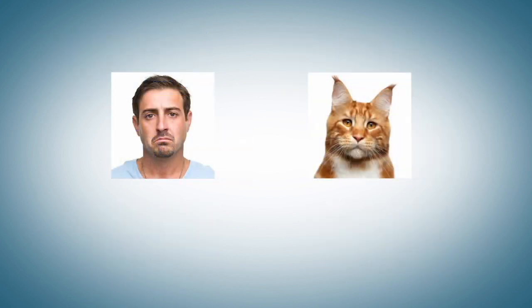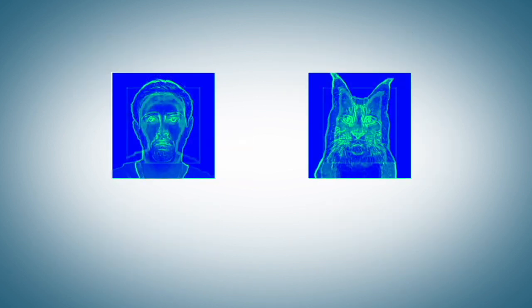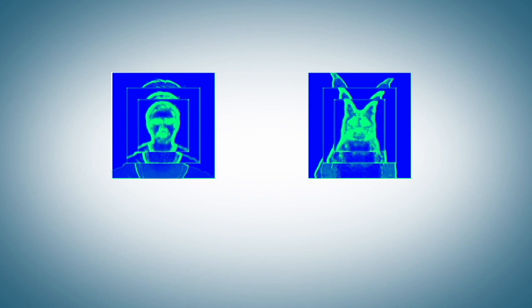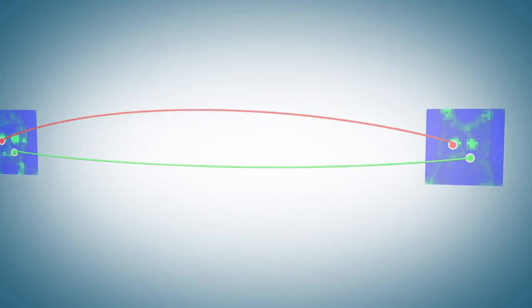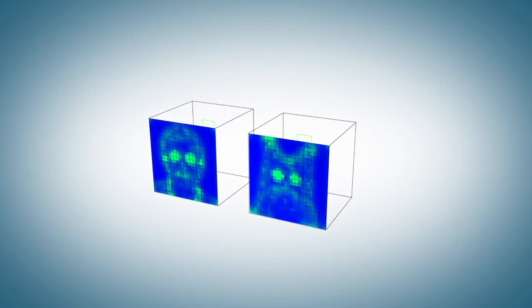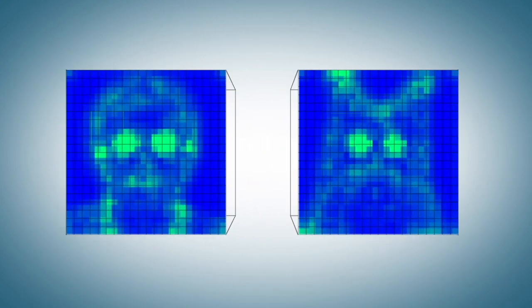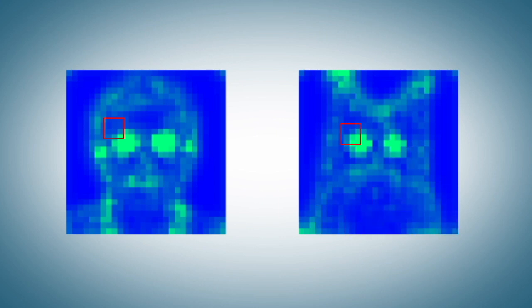Given two input images, two hierarchies of features are extracted from a pre-trained deep classification network. Starting from the coarsest level, for each pair of corresponding layers, we extract a sparse set of neural best bodies, or MBBs. A pair of neurons is considered a mutual best bodies pair if the neurons are mutual nearest neighbors — namely, each neuron is the nearest neighbor of the other in the corresponding set.